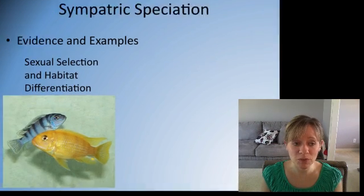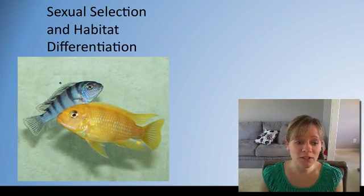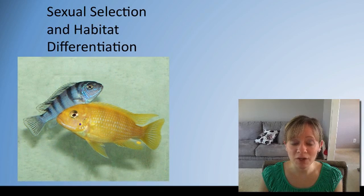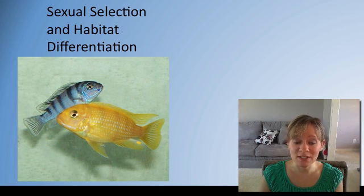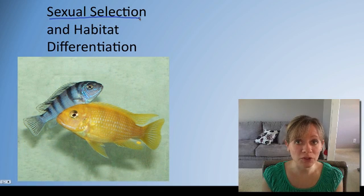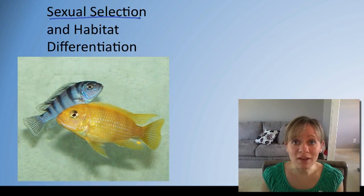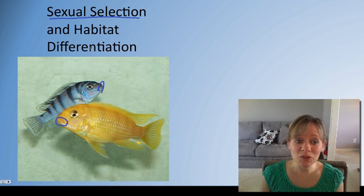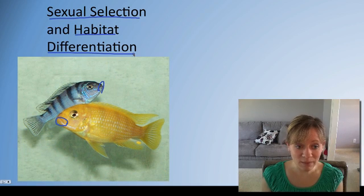For sympatric speciation, cichlids in Lake Victoria in Africa are a great example. They live in the same lake but are two different species. This happened because of sexual selection — males preferring only certain colors and types of females — and habitat differentiation, as they feed on different things due to different jaws and teeth. These two forces were powerful enough to drive speciation within the same environment.